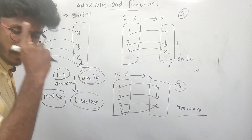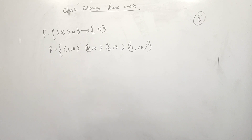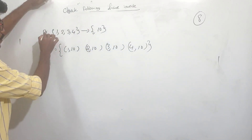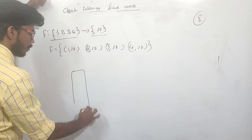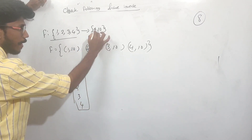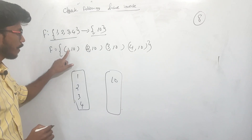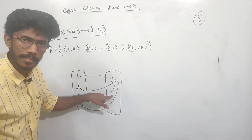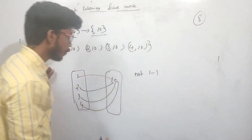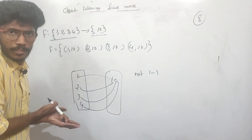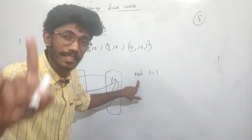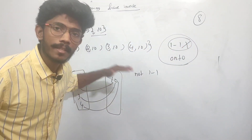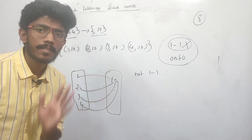Now let's move to the next topic: inverse functions. When you have an invertible function, it has an inverse function. Let's check: for the set 1, 2, 3, 4 — if it is one-one, the inverse exists. But if it is many-to-one (not one-one), it is not invertible and the inverse does not exist.